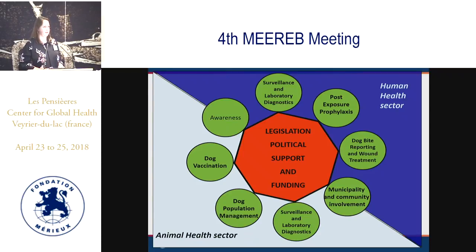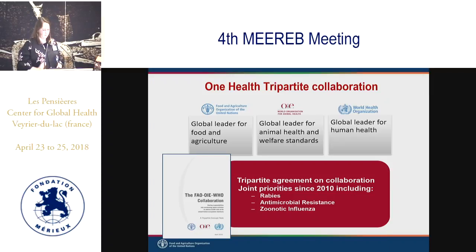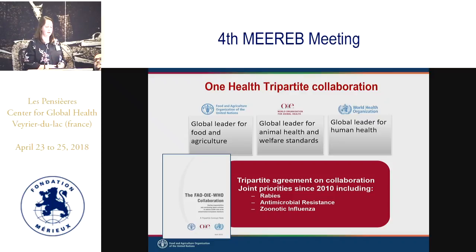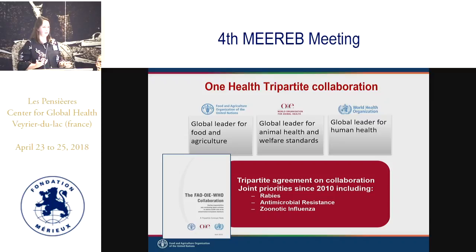We know that it takes an intersectoral approach involving all various sectors. At FAO, we have a formal collaboration as part of the tripartite with OIE and WHO on having a One Health approach. A paper that came out in 2010 outlines how we agreed to work together, prioritizing three topics at that time including rabies, antimicrobial resistance, and zoonotic influenza viruses. We've been working collaboratively since then, and just this past fall there was an update to this document where we all recommitted to continuing to work together and expanding to other topics.